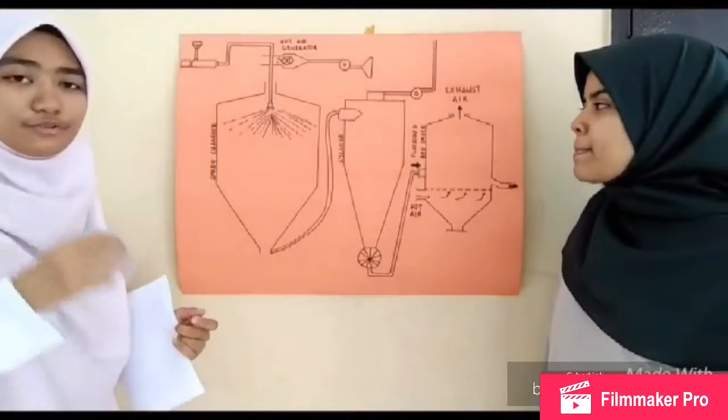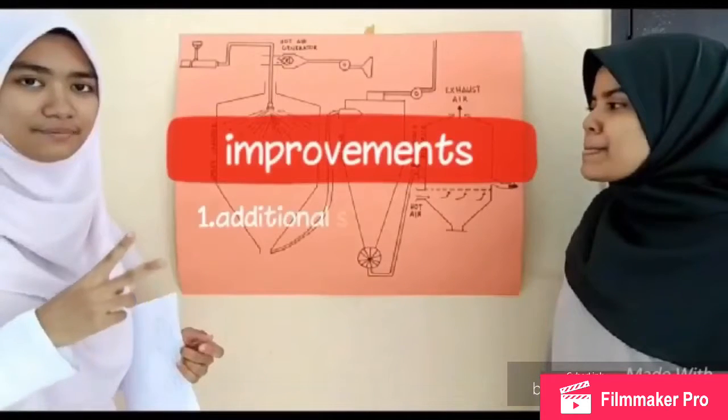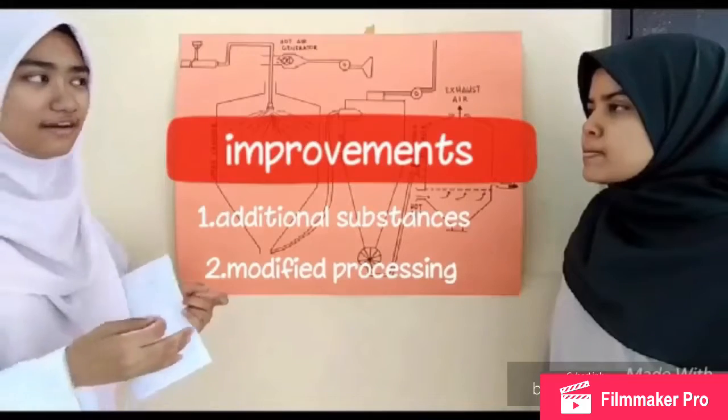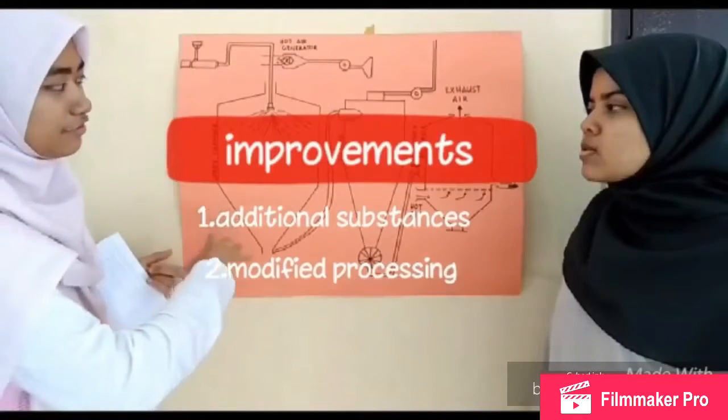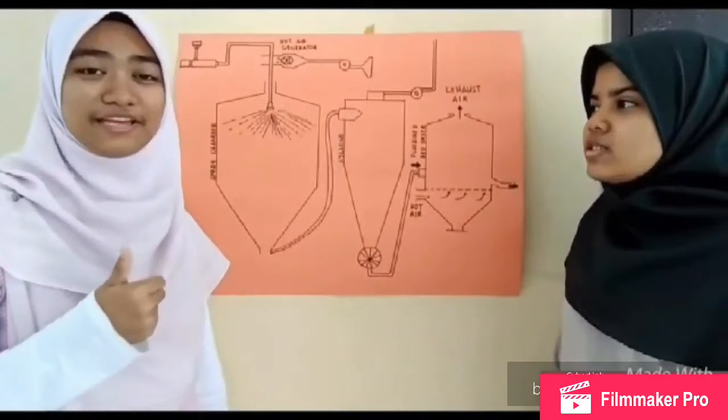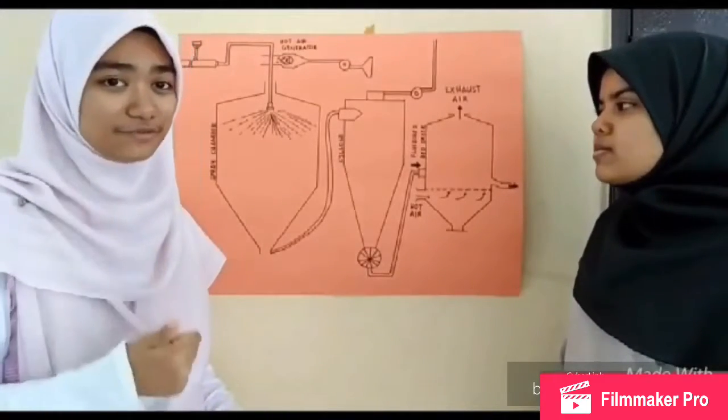There are two modifications that can be made: addition of food additives and modification in terms of the process. The first one is by adding maltodextrin.